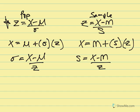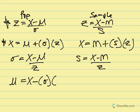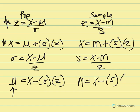Finally, we may be asked to solve for the mean of a distribution. Using the base equation and moving variables around: mu equals the X-value minus the standard deviation multiplied by the Z-score. We subtract that product from the X-value to work backwards to the center — the mean. For a sample, m equals X minus the product of standard deviation multiplied by Z.